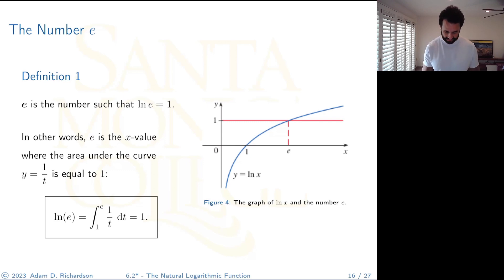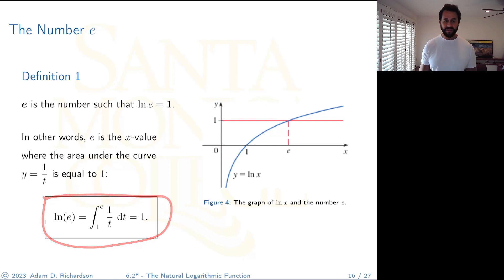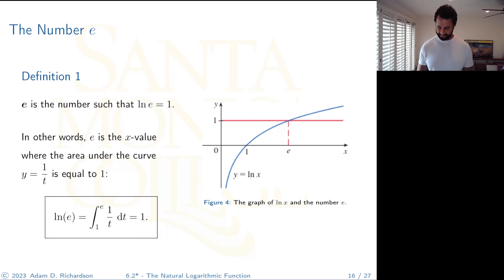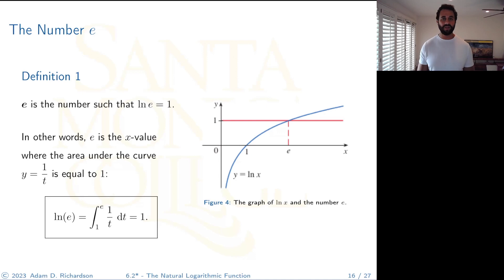So e is the x-value where the area under the curve 1/t from 1 to x equals 1. We know it exists by the IVT, we give it a special name — e. We know exactly what it's doing and where it's located.